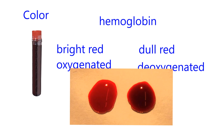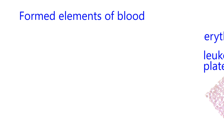Now let's talk about the formed elements of the blood. The formed elements refer to anything you can see — any particles you can see with a microscope. They are basically cells or fragments of cells. You cannot see amino acids, hormones, glucose, or any of those molecules when you look at a microscope. So let's talk about the three formed elements.